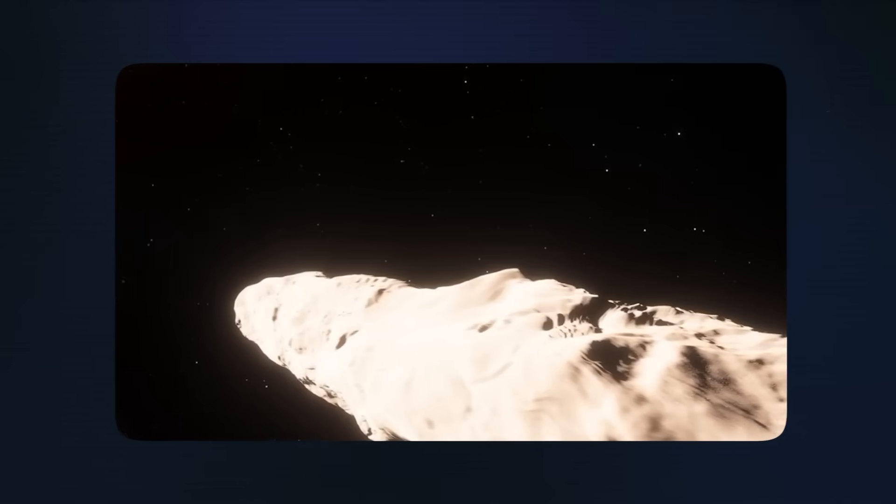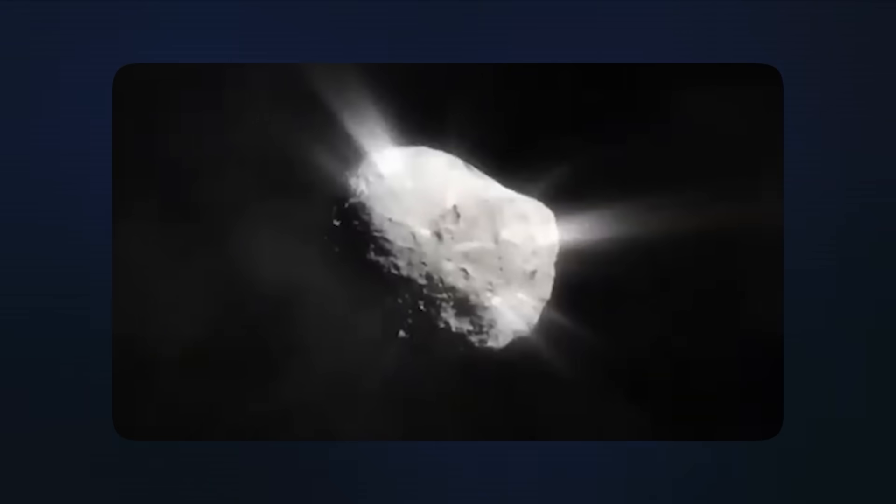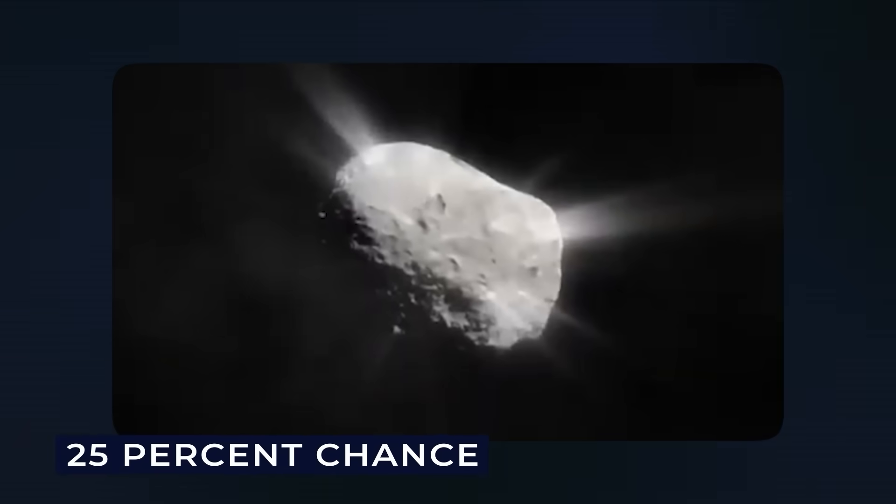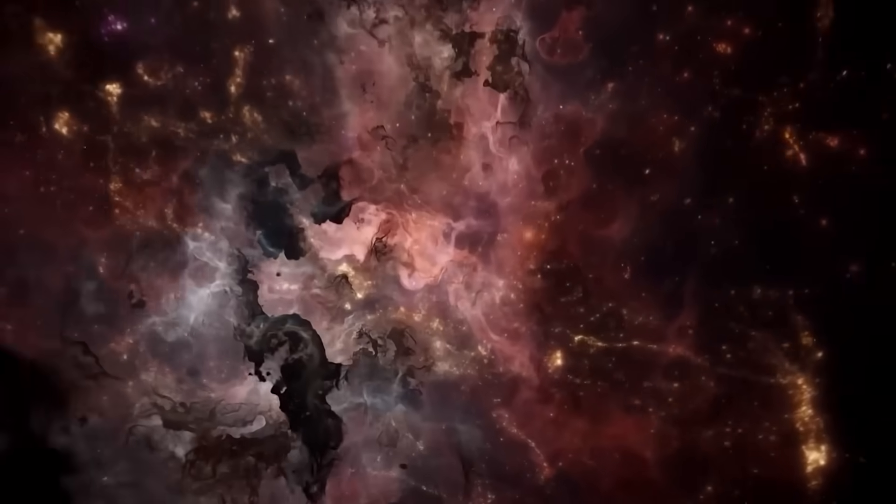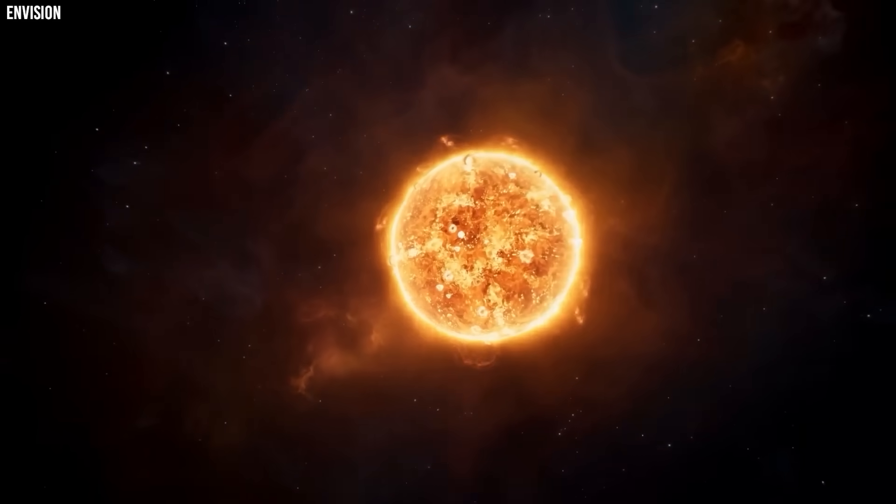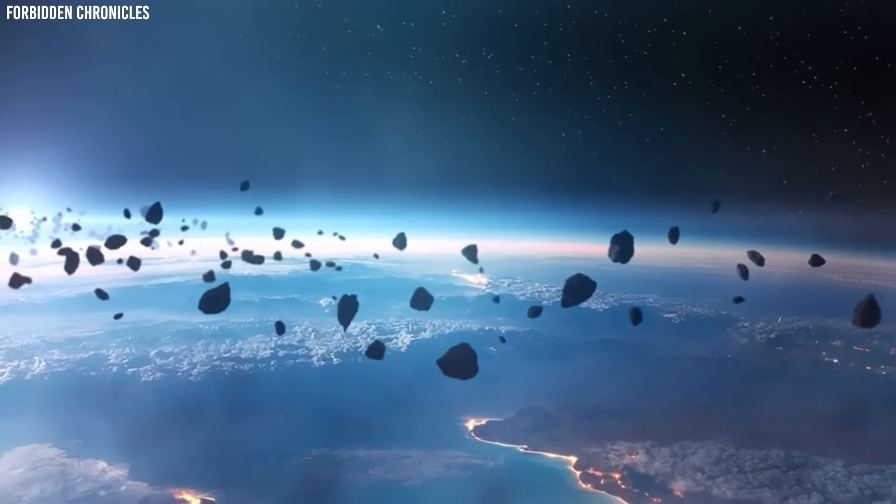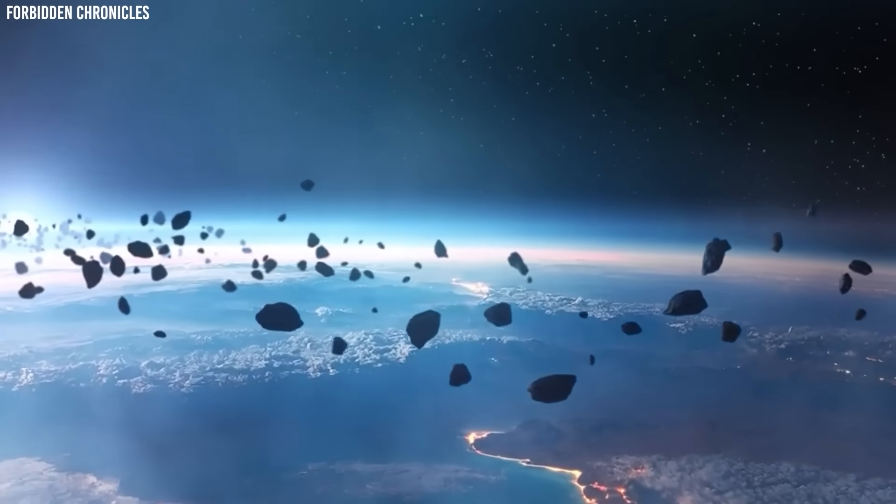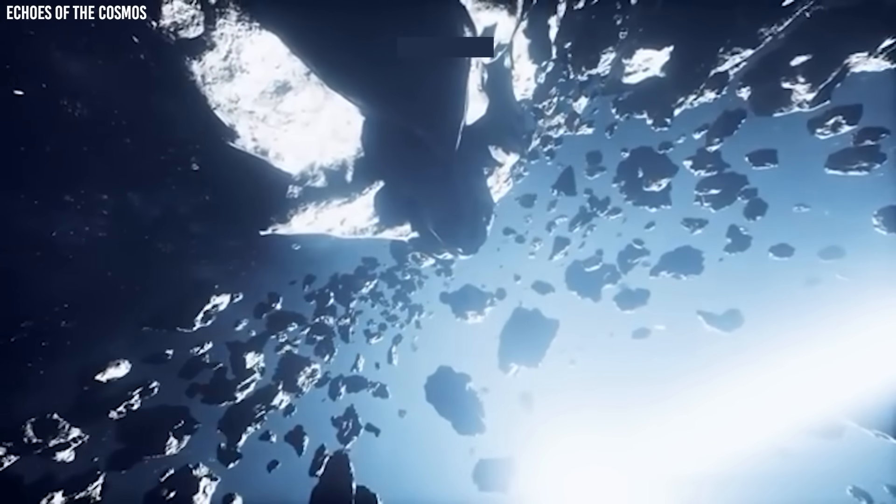Historical data from previous comet encounters suggests that objects with perihelion distances around half an astronomical unit have roughly a 25% chance of complete disintegration, with the probability increasing dramatically for smaller nuclei. The fact that SWAN has shown no immediate signs of fragmentation is encouraging, but comets can still break apart weeks or months after their closest solar approach as thermal stress cracks continue to propagate through the nucleus structure.